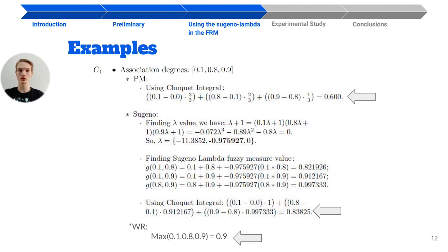After that, using the another equation of the Sugeno lambda, it will aggregate the value one by one using the lambda and put your results on the Choquet integral, returning 0.83 in this case.